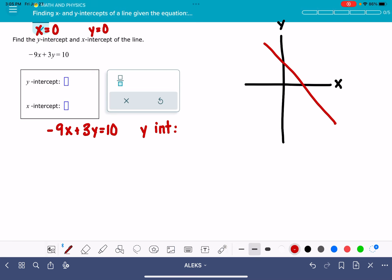So I'm going to plug zero in as my x value and solve: 0 + 3y = 10, so 3y = 10, which means y = 10/3. That is my y-intercept.